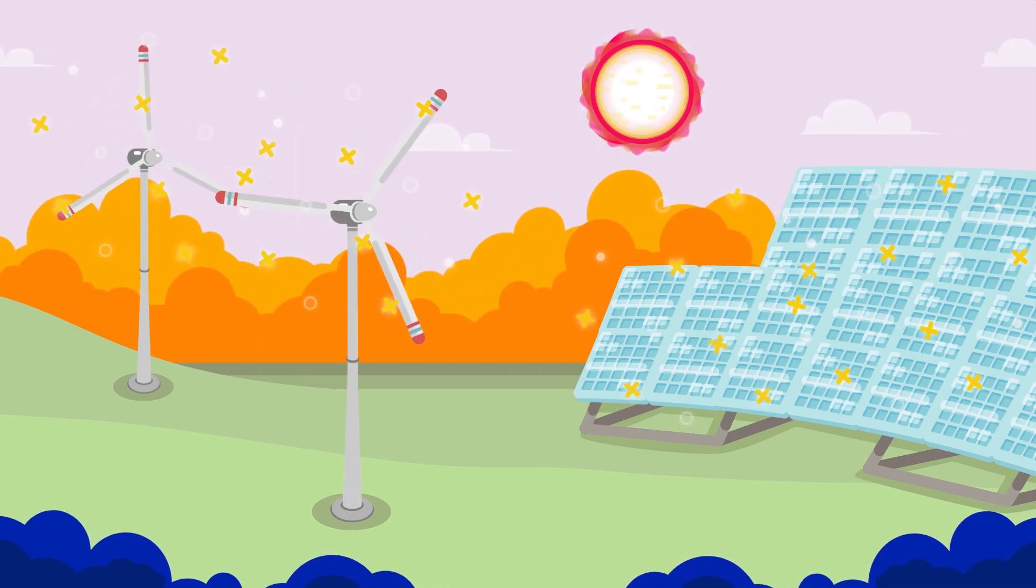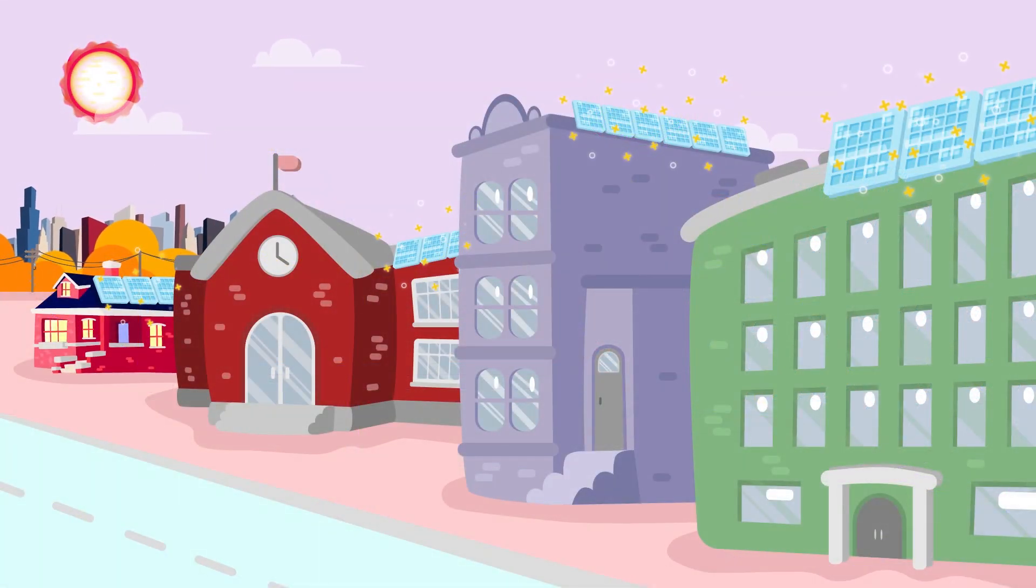Renewable energy is also called clean energy or green energy. Clean energy helps our planet by making electricity without making pollution. Today, we can use clean, renewable energy to make electricity that helps to power our homes and schools and businesses.